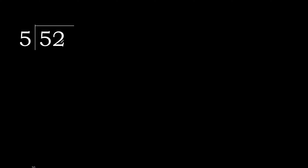52 divided by 5. 5 is not less, therefore work with 5. 5 multiplied by which number is nearest but not greater? 5 multiplied by 2 is 10 — 10 is greater. So 5 multiplied by 1 is 5.